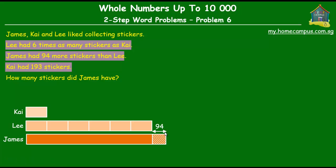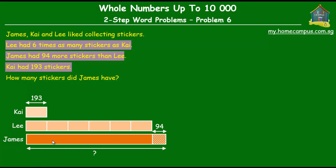Next, Kai had 193 stickers, so the pink unit that we made earlier for Kai is equal to 193. How many stickers did James have? That's the big question that we have to find the answer to, and on the model it's given by this orange unit plus the 94.